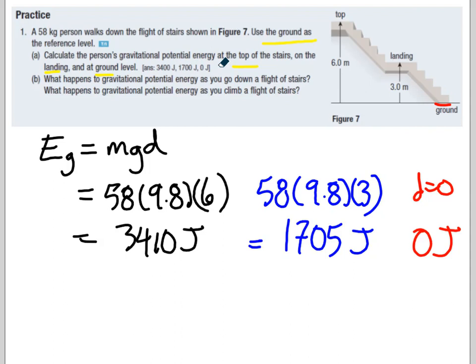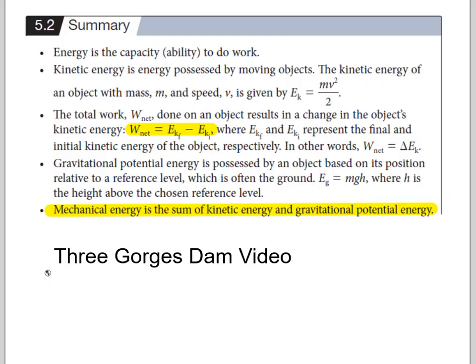So 3400, 1700, and 0 joules. So what happens to gravitational potential energy as you go down a flight of stairs? Well, your gravitational potential energy decreases. What happens to gravitational potential energy as you climb a flight of stairs? Your gravitational potential energy increases.